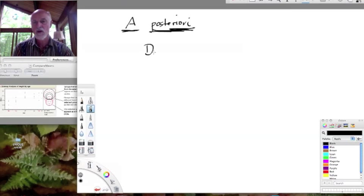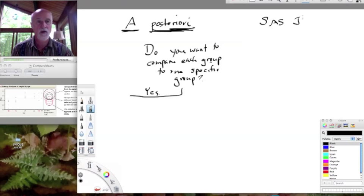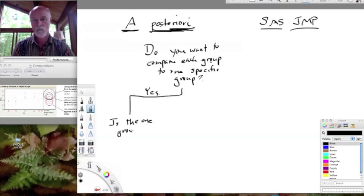So the first question we ask ourselves is: do you want to compare each treatment to one specific mean? Or each group, let's say, each group to one specific group? And if the answer to that is yes - and by the way, these tests are the ones given by our computer program that we're using in this class, SAS JMP. Other computer programs may have other a posteriori tests they give you, but they will often be in these same classes. So if you just want to compare each group to one group, that gives you a little bit more power.